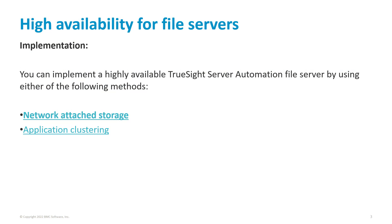You can implement a highly available two-site server automation file server by using either of the following methods. The first one is network attached storage. The second one is application clustering. Application clustering is for implementing a highly available file server using an application clustering solution such as Veritas Cluster Server. The details of the installation are specific to the chosen software solution. However, in this webinar we will be discussing about the NAS solution only.